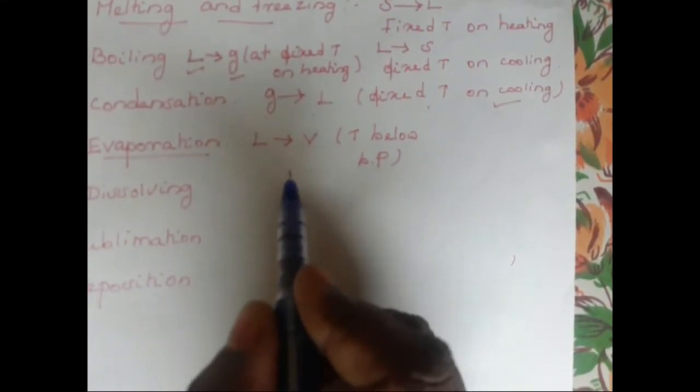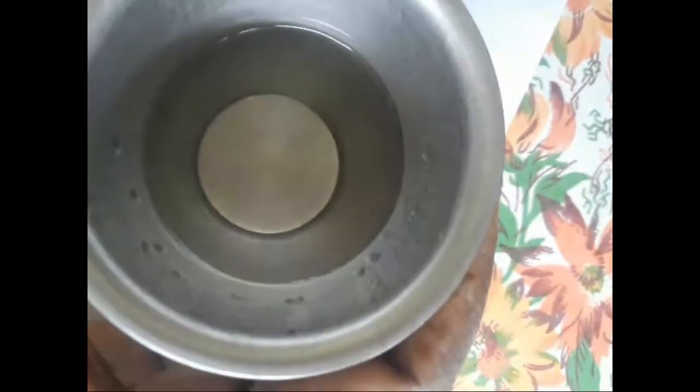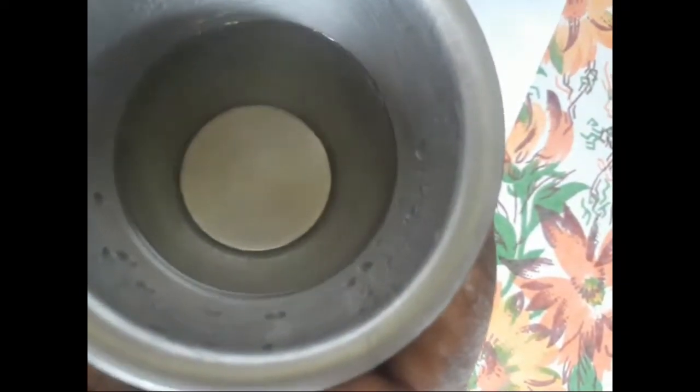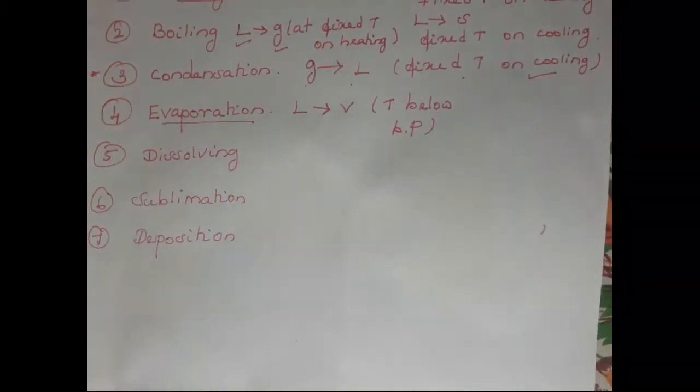What can we say is an example for evaporation? Look at here. I am going to take this hot water. Now it is below its boiling point. You can see a little amount of fumes coming out — it means that it is getting converted into vapour. So this liquid water changes into vapour below its boiling point, which means the evaporation process is occurring here.